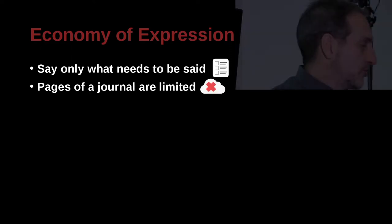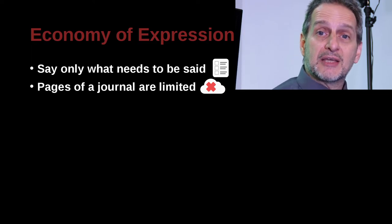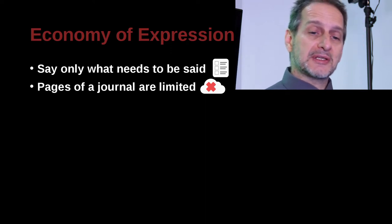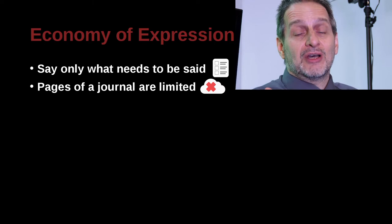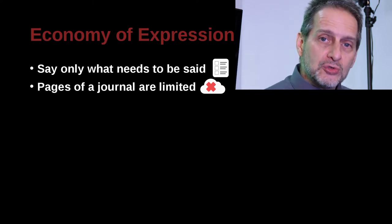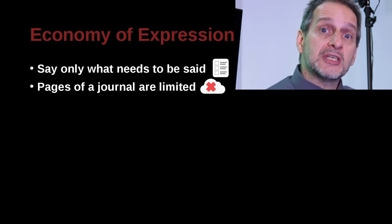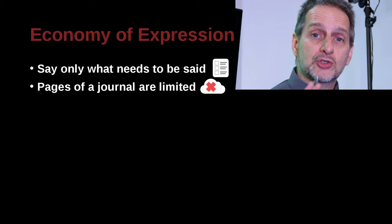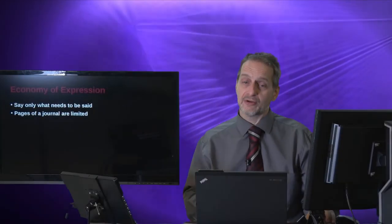The economy of expression means we're going to try to keep our writing very short — say only what needs to be said. Pages of a journal are limited. This is a little funny because when we're writing a thesis, we think longer is better. If your professor tells you to write 100 pages, you have to. But usually shorter is better, and especially in publishing, always shorter is better. If you're submitting to a journal or conference, shorter is always going to be better.